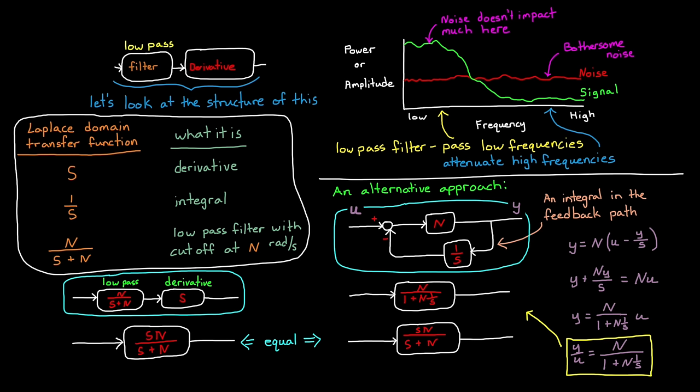So why implement one versus the other? Well, I think it comes down to this. Writing out the filter and derivative explicitly makes your code easy to read and understand. So I think it's preferred. However, it takes more math operations and more computer memory to accomplish this. The integral in the feedback path is a more efficient computation. So which way you implement it depends on what you're going for. Easy to read code or efficient algorithms.